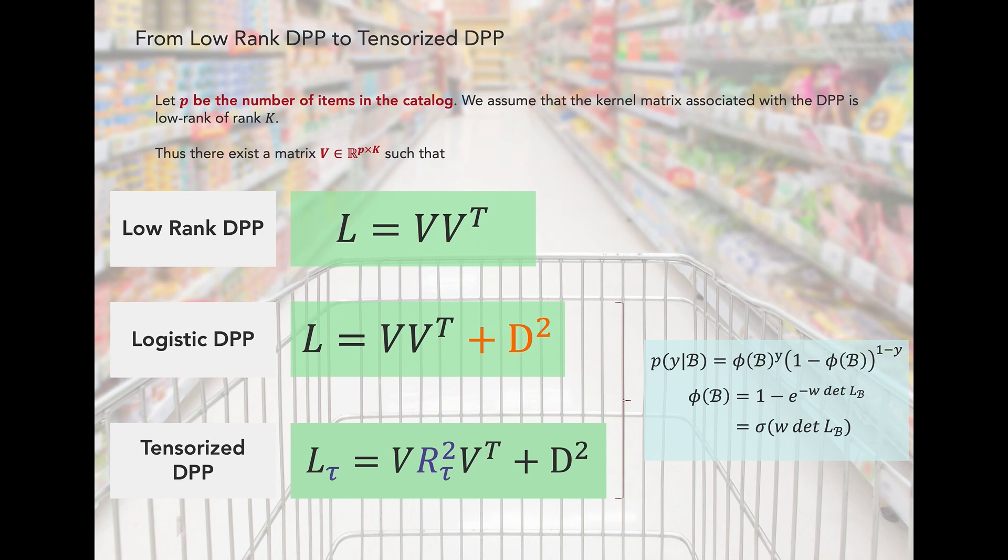DPPs can be parameterized in terms of a low-rank embedding matrix V, as shown here. This low-rank parameterization allows the model to scale much more effectively than the full-rank version of the model, while reducing the number of model parameters.